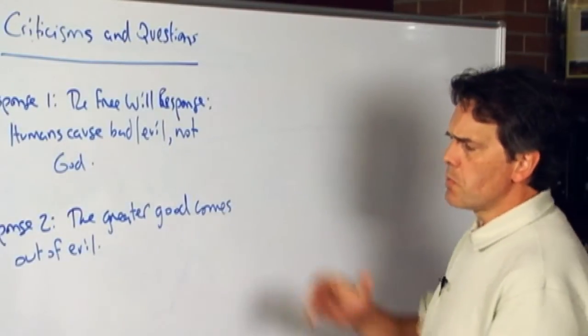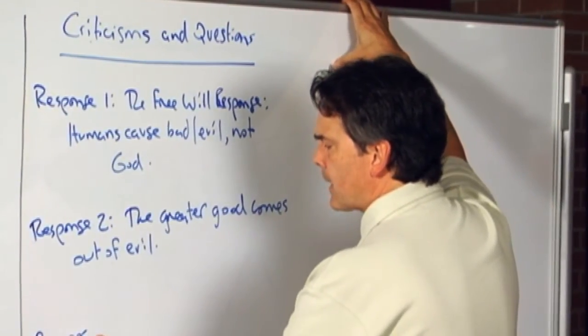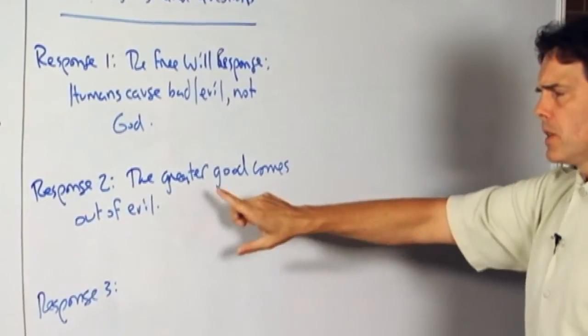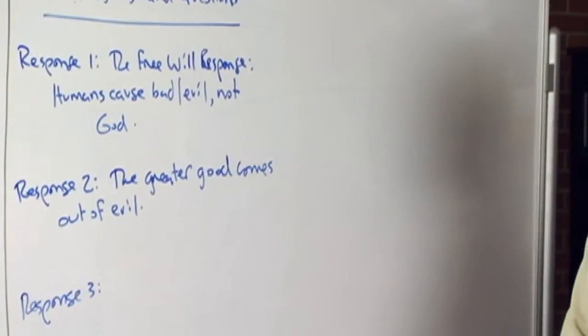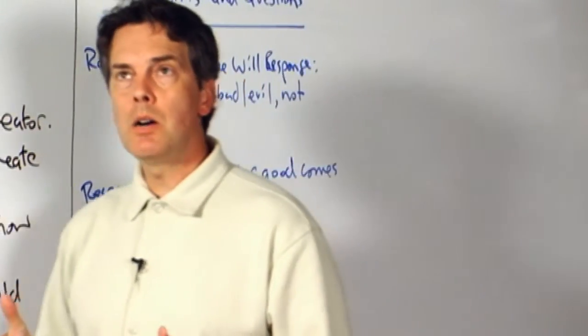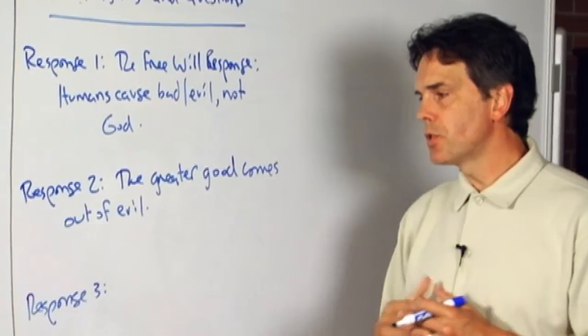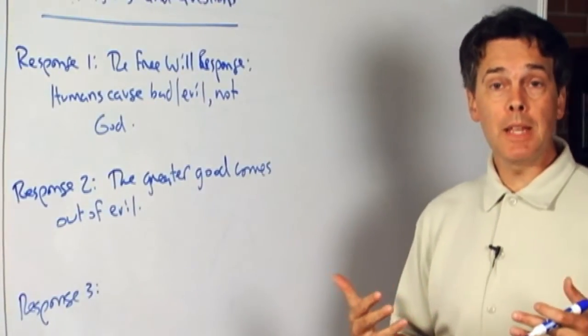A third kind of response, that's a fairly standard response, is to say that, and it could be seen as a variation of number two, that the reason why God, as a perfect being, allows evil and bad things to exist in the world is to make us more perfect beings.